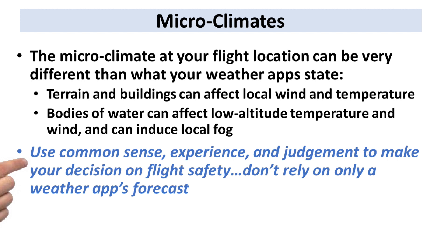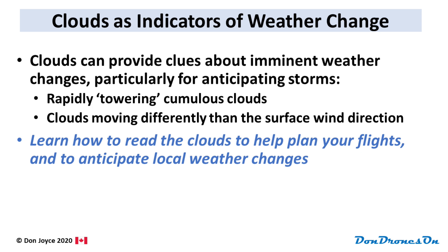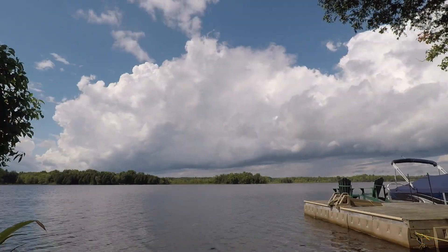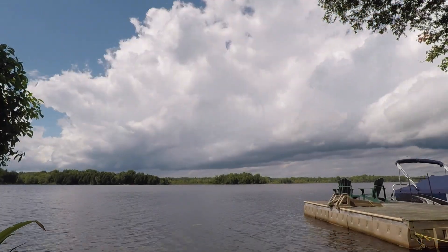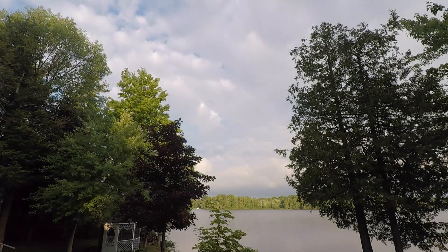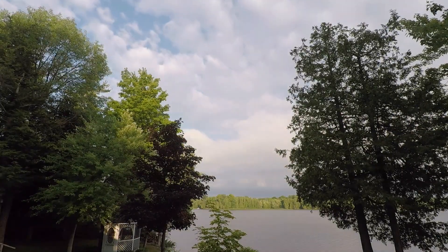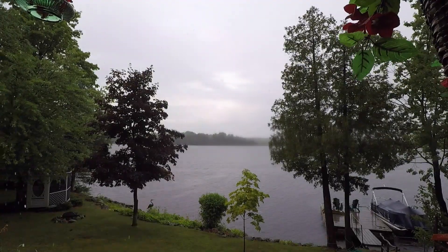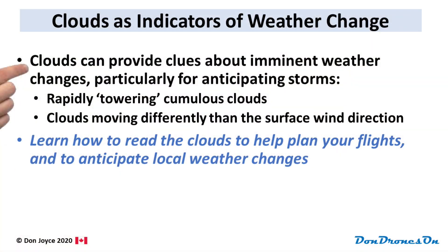Don't fly just because your weather app says the weather is fine. As part of your on-site weather assessment, watch the clouds. Clouds can provide tremendous clues about imminent weather changes, particularly for anticipating storms. Rapidly towering cumulus clouds, like these ones, can turn into thunderstorms rapidly. Similarly, clouds moving in different directions from the surface wind can be an indication that a storm is about to happen. Learn how to read the clouds to help plan your flights and to anticipate local weather changes.